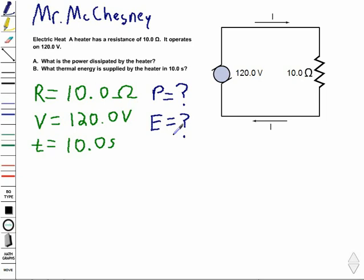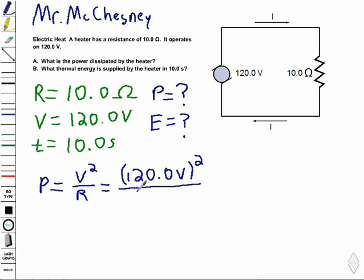So because we've got resistance and voltage, we can use the power equation that you see earlier in your book, which is the voltage squared divided by resistance equals power. So that's going to be 120.0 volts. And remember to square that. Usually if you make a mistake in these problems, it's that you forget to square the numbers. And then we're going to divide it by our resistance.